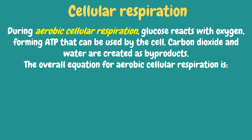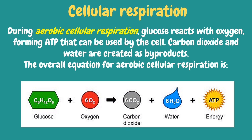During aerobic cellular respiration, glucose reacts with oxygen, forming ATP that can be used by the cell. Carbon dioxide and water are created as byproducts. The overall equation for aerobic cellular respiration is: one molecule of glucose plus six molecules of oxygen will produce six molecules of carbon dioxide, six molecules of water, and 32 to 36 ATP.